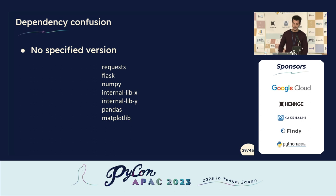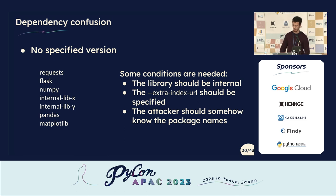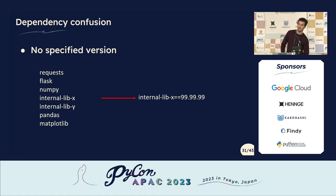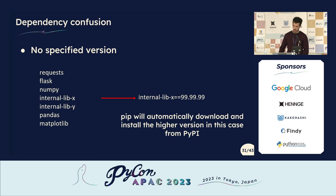The second type is when there is no specified version in your requirements.txt. The conditions needed: the library is internal, '--extra-index-url' is used, and the attacker somehow knows the package names. The attacker simply takes the same name — for example internal-lib-x — uploads it to PyPI with a very high version number like 99.99.99, assuming the company doesn't have a version that high. PyPI will fetch the higher version automatically, downloading the malicious package instead of the private one.